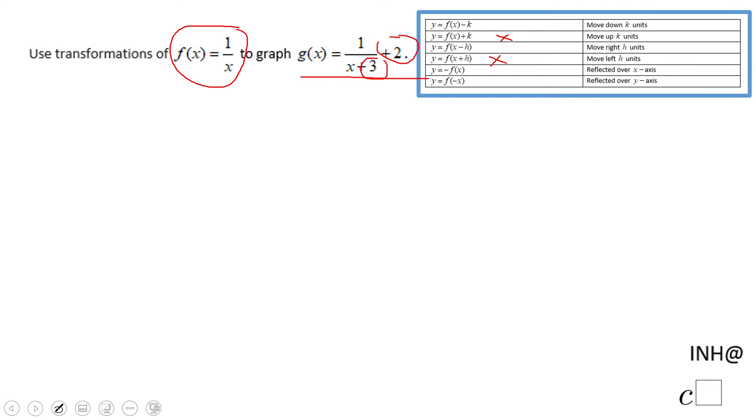So the graph of g of x is going to be, like I said, left 3 units and up 2 units. These are the transformations that you need to do to f of x to get g of x.